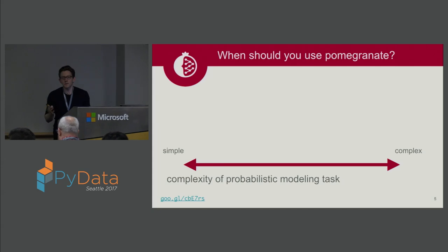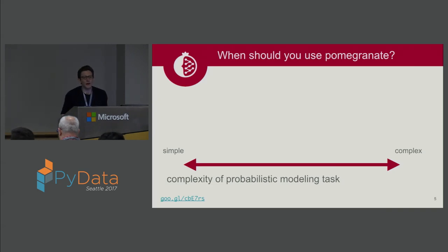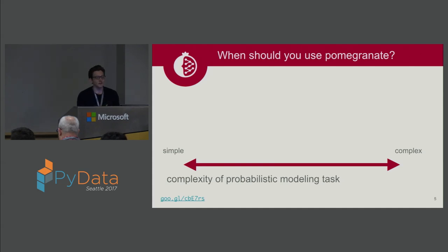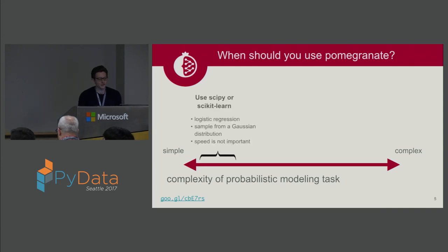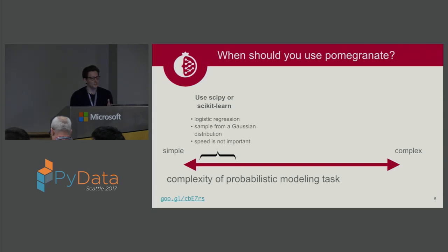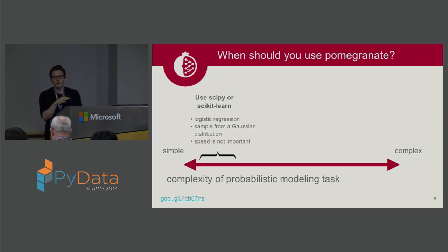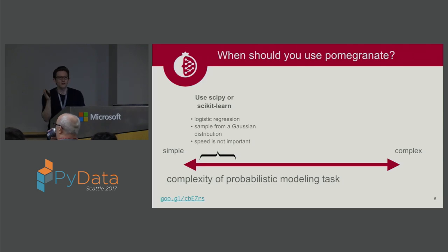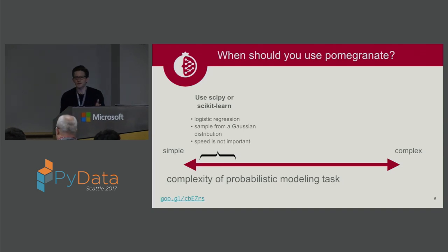Probabilistic modeling is a very large field with many tools. You can divide tasks into a continuum from very simple to very complex. On the simple side — logistic regression, sampling from a Gaussian — you probably don't need Pomegranate; those are available in SciPy or Scikit-Learn. If speed isn't important, just use the tools you're already using. On the other end, cutting-edge statistics research is usually implemented in custom R packages or standalone command-line tools, which may be cases where distributions or inference problems aren't available in Pomegranate.